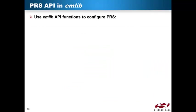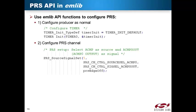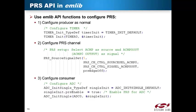EMLIB includes API functions for configuring PRS. When EMLIB is used, three simple steps will configure PRS. The first step is to configure the producer peripheral as normal, just as if PRS is not used. Then use the PRS API functions to configure the PRS channel itself as well as selecting a producer signal. Note that PRS source signal set takes two input values to select the producer: one value to select the producer itself and another to select a specific reflex signal from the chosen peripheral. Please refer to the device family reference manual for a complete list of reflex signals. The last step is to configure the consumer, using the consumer peripheral API to select which reflex channel a consumer monitors and which actions to take when a reflex signal is detected.